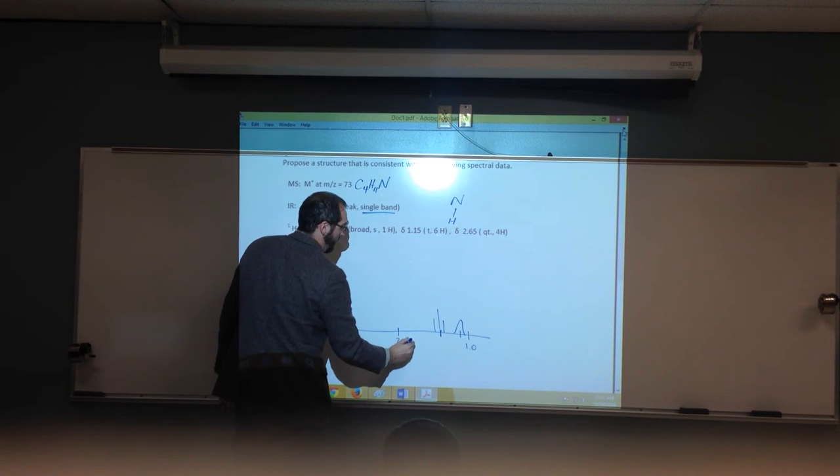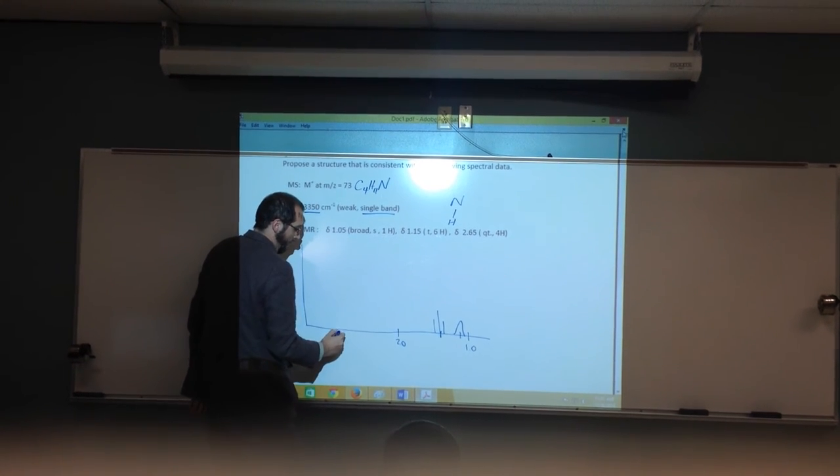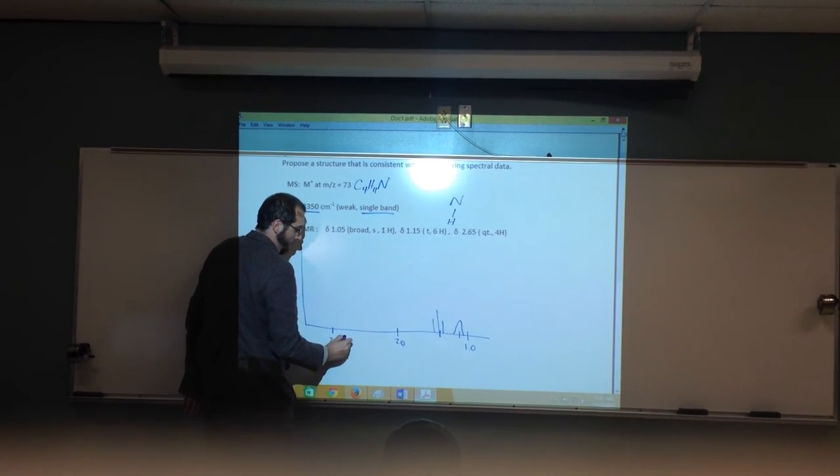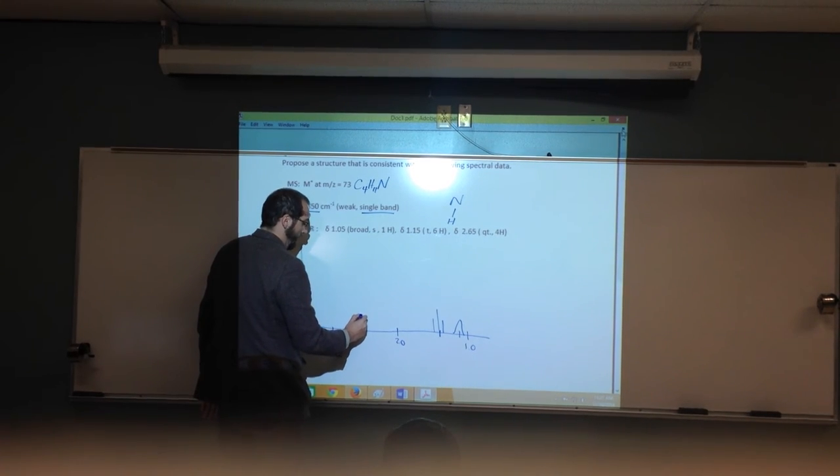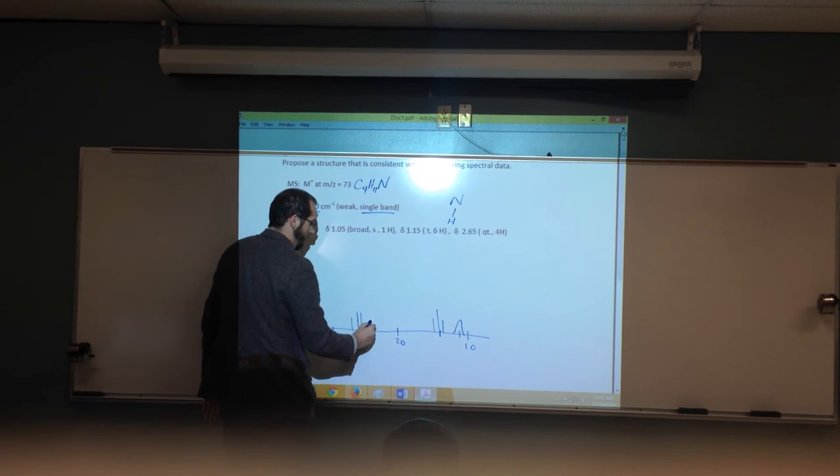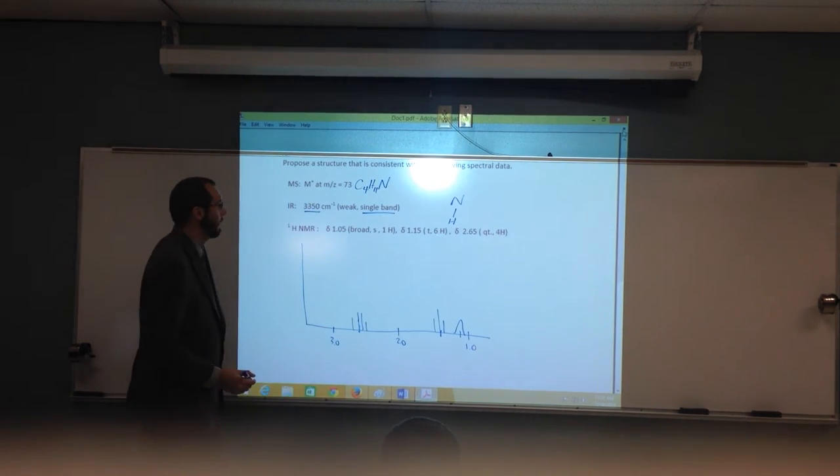And then at 2, we'll say 2, so right here, 2.65, 3 over 2. So somewhere around there, we're going to have a quartet that looks like that.